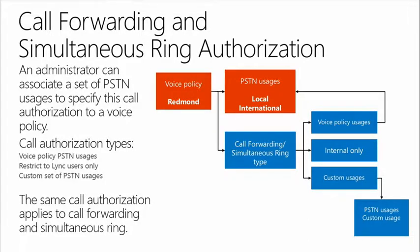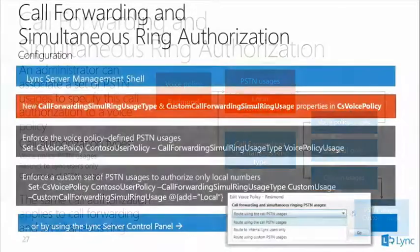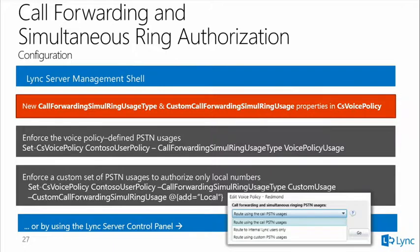The voice policy is used to configure call forwarding authorization. A 'local' usage policy that includes internal, custom, and other settings can have call forwarding set to internal-only. This can be configured via the Lync Management Shell using New-CsCallForwardingUsageType, or through the GUI. Settings can be enforced per user, per site, or globally, and by default users inherit their current dialing properties.